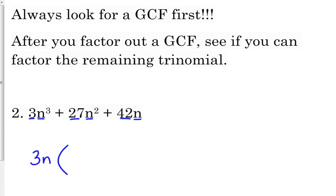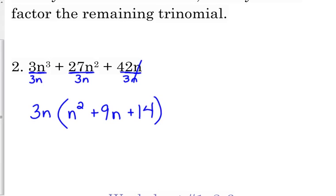So we're going to factor out a 3n. Now this helps some people. Some people don't have to do this. But factoring out a GCF is like dividing by what you say the GCF is. So 3 divided by 3 is 1. n³ over n is n². Remember when you divide, you subtract the exponents. 27 divided by 3 is 9. And n² over n is n. 42 divided by 3 is 14. And n over n cancels. Now we can factor that trinomial.